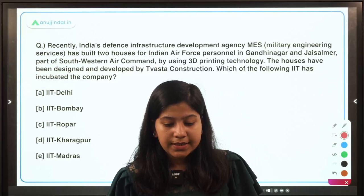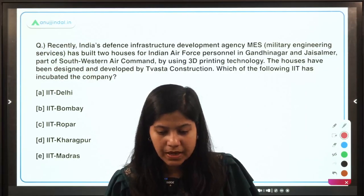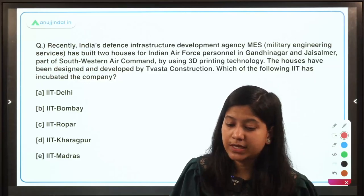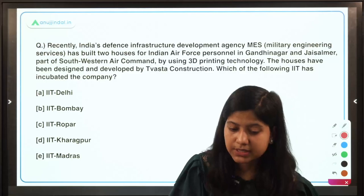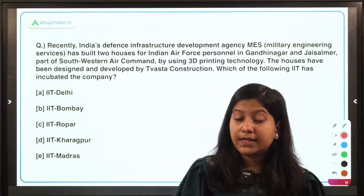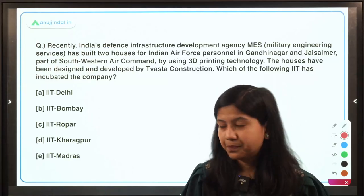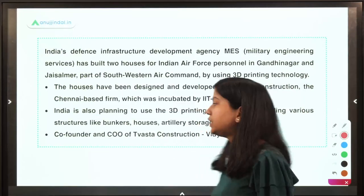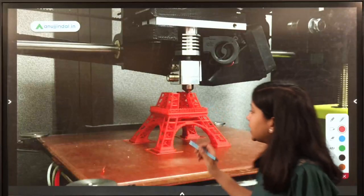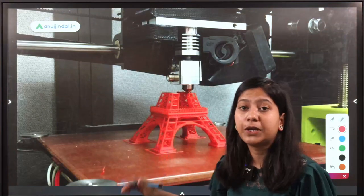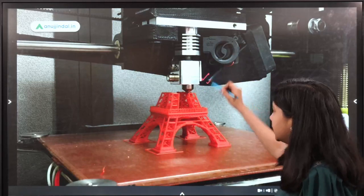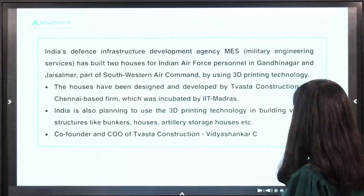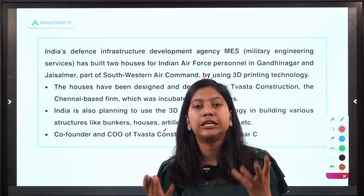India's defense infrastructure development agency MES has built two houses for Indian Air Force personnel in Gandhinagar and Jaisalmer, which are part of the Southwestern Air Command, using 3D printing technology. The company that designed and developed the construction was incubated by IIT Madras. 3D printing technology creates actual physical structures — just as a machine can create a 3D model of the Eiffel Tower with actual matter, similarly these houses have been developed for the Indian Air Force.